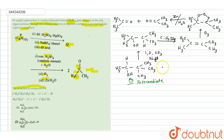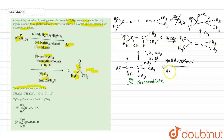Again, adding NaBH4 in ethanol with dilute acid in the reverse step: here the OH group is converted into a keto group, giving us a ketone intermediate — CH3-CO-CH(CH3)-CH3.